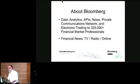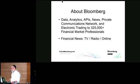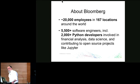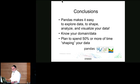A bit about Bloomberg: we provide data, analytics, a private communications network, and some electronic trading to over 325,000 financial market professionals. We also provide financial news via television, radio, and online. We have about 20,000 employees in 167 locations including London, over 5,500 software engineers, and among them at least 2,000 — probably more — are involved in Python in one way or another.